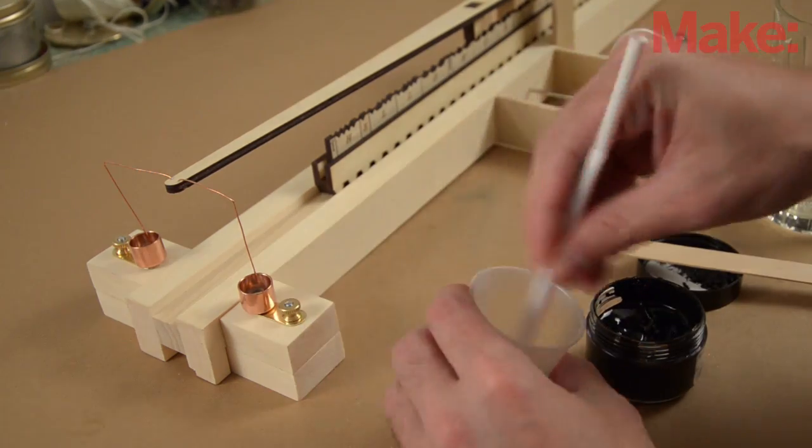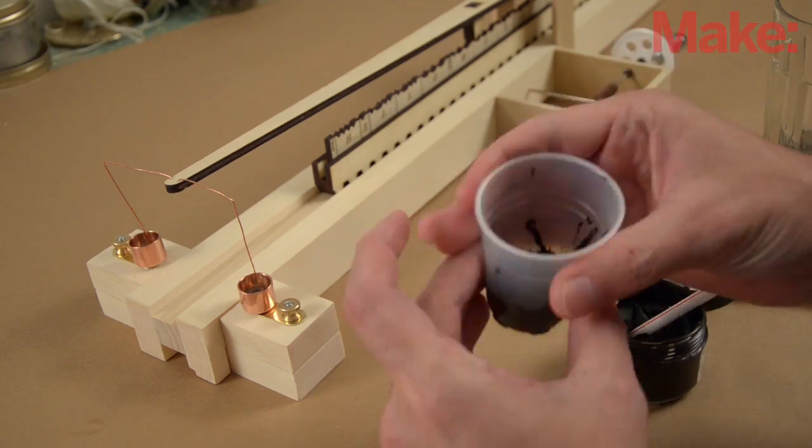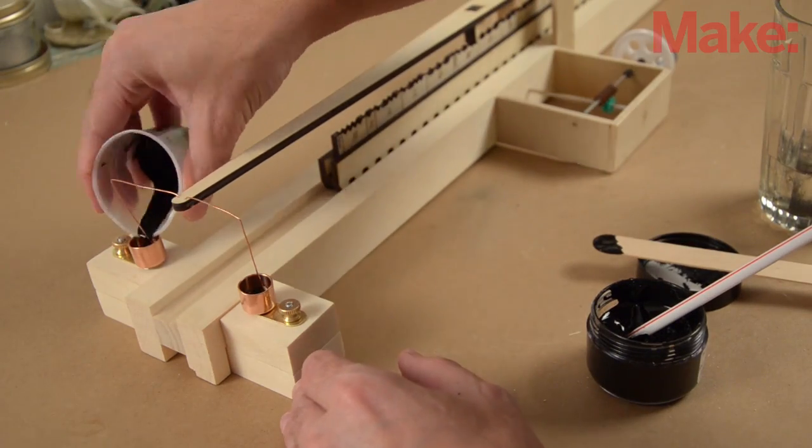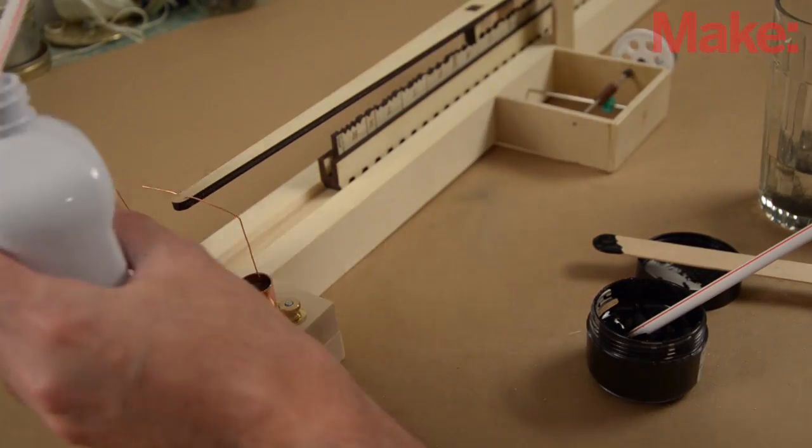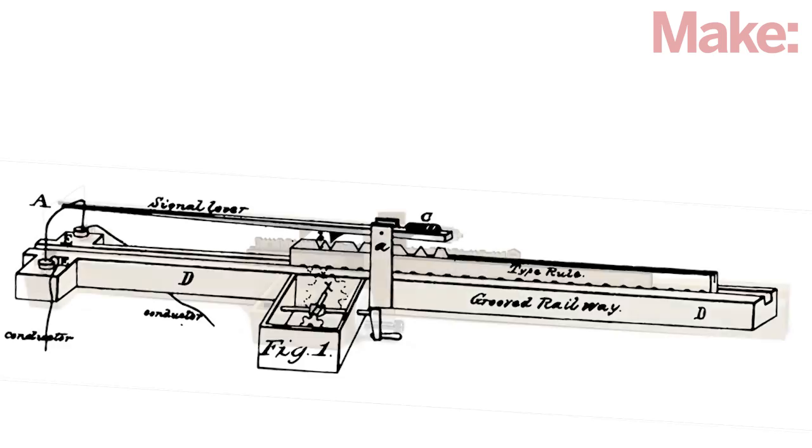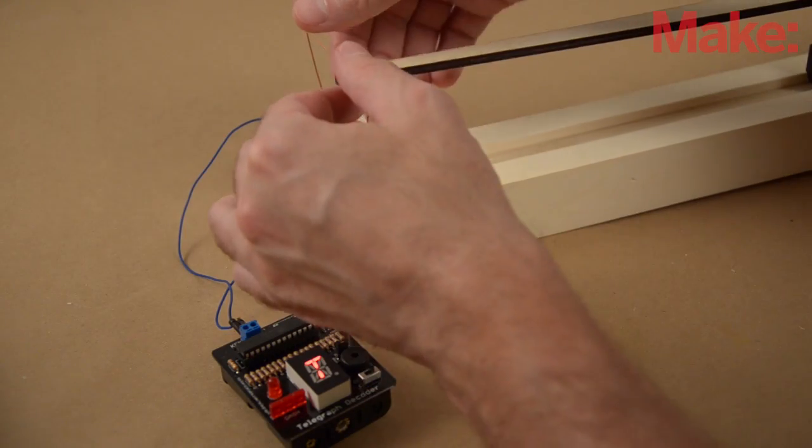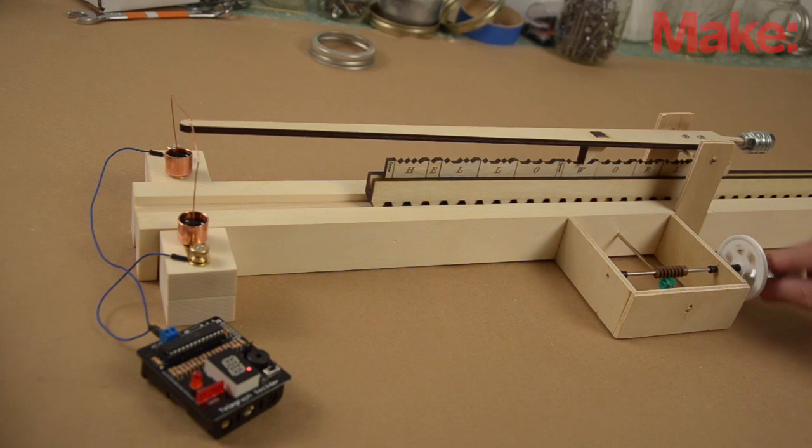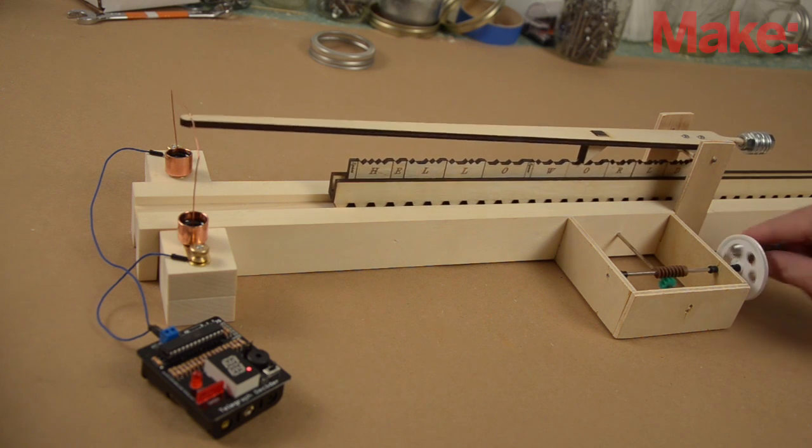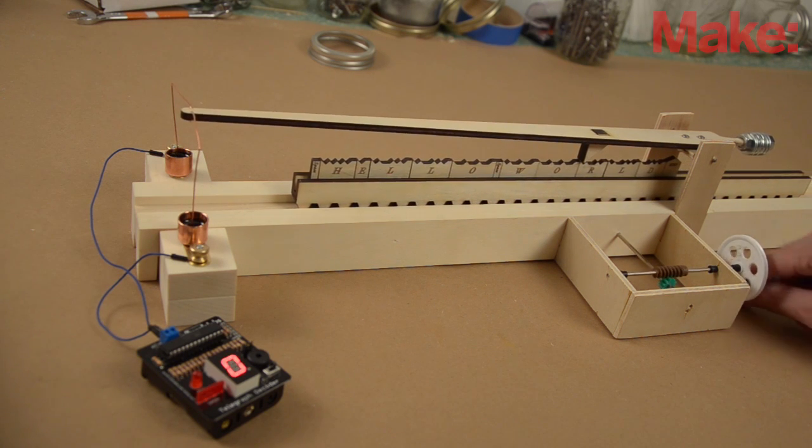Mercury was common in inventions of the time, but today it's a known neurotoxin, so I'm going to make a safer alternative with conductive paint. Since the paint is water-based, I add a few drops of mineral oil on top to keep it from evaporating. It takes some work adjusting the counterweights and switch wire to get it calibrated. But finally, I can send a consistent message. I use a Morse code decoder to double-check my work.